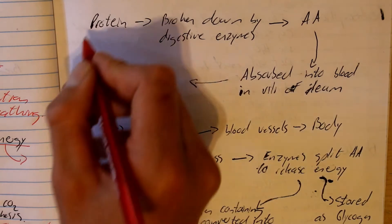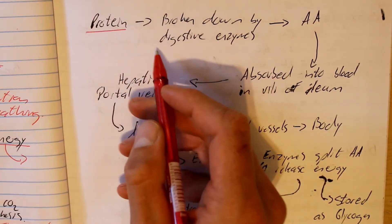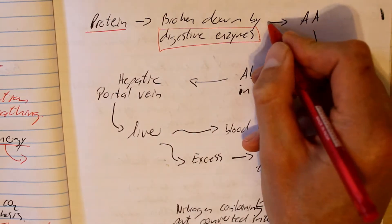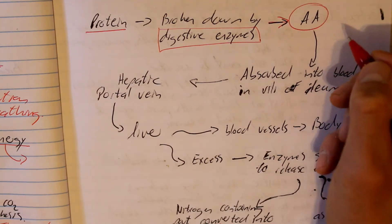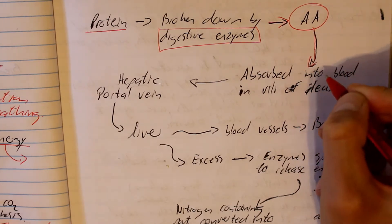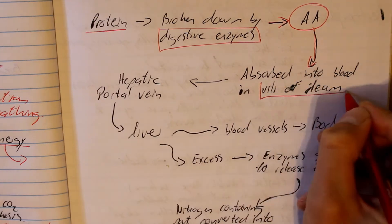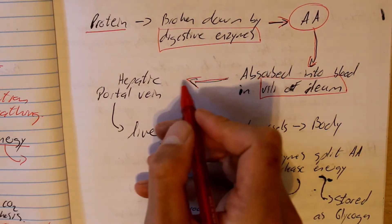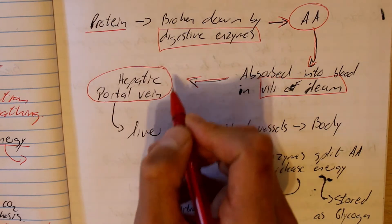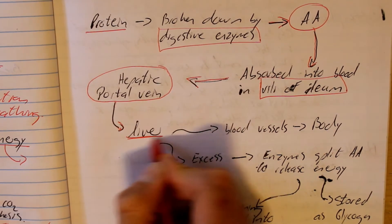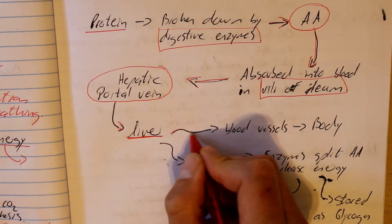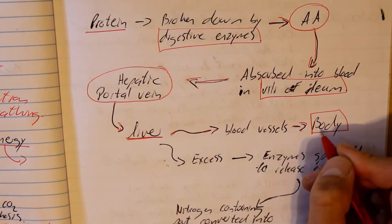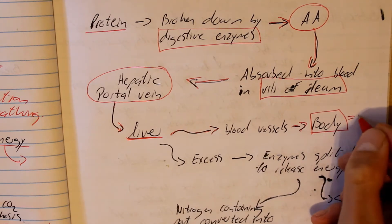This is how it works. We have our protein which we take in through our diet. Then the protein gets broken down in the stomach by digestive enzymes, which break the protein down to amino acids. Our amino acids travel into our bloodstream and get absorbed in the villi of the ileum, which is in the small intestine. The amino acids then travel in the bloodstream through to our hepatic portal vein, which is the vein going into the liver. Once in the liver, some of the amino acids get used and go to our blood vessels, which carry them to the rest of the body — for example, in protein synthesis to build muscle.